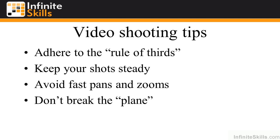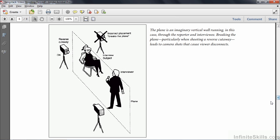Don't break the plane. The plane is an imaginary line that runs through your scene. In a basketball game, the plane runs straight down the middle of the court. If you have a camera on one side and the action is going right to left, putting a camera on the other side makes the action go left to right — very confusing. In an interview, if the subject is looking toward the interviewer, shooting cutaways from the opposite side confuses viewers. Keep your cameras on the same side of the plane for both the interview and the reverse cutaway of the interviewer.